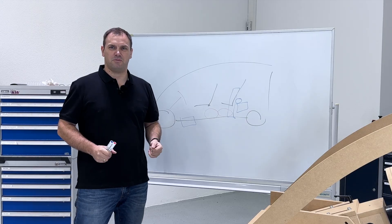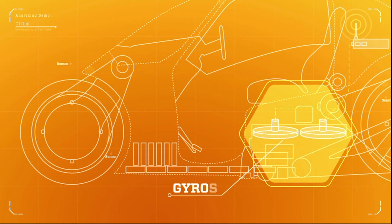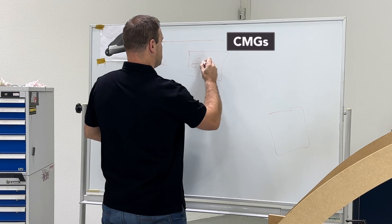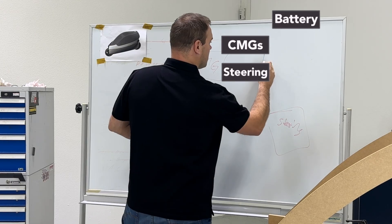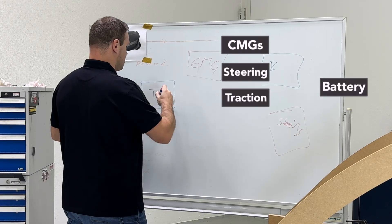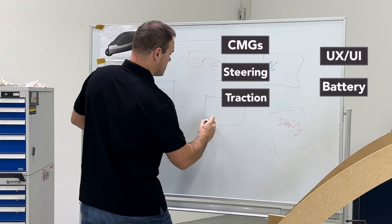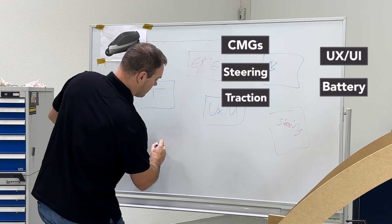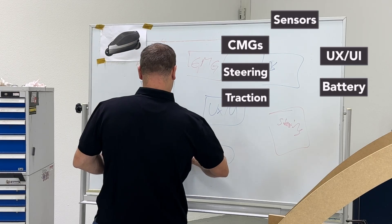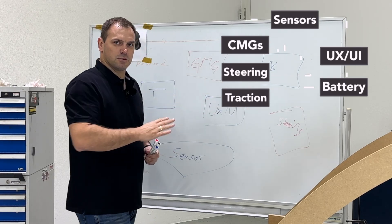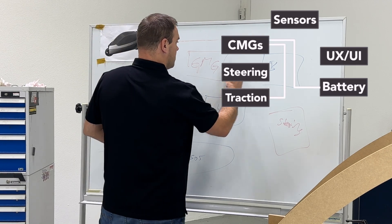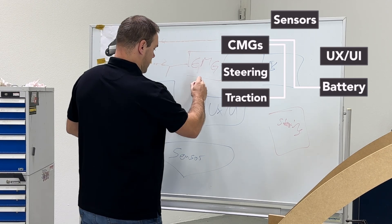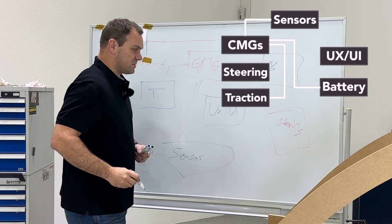We are a software-defined vehicle, so we have all the components. I explained the CMGs, the traction system — these are the CMGs, here is the steering for example, then the battery system, the traction system, and we have the UX/UI. We also have a big package for the sensors. Each of these positions has to speak with each other. For example, the CMG has to speak with the battery, has to speak with the traction system, and get all the inputs from the sensor system.